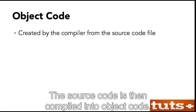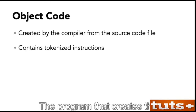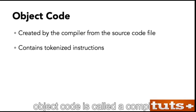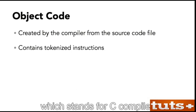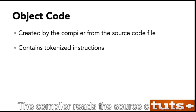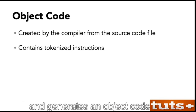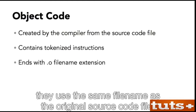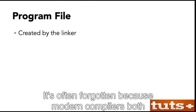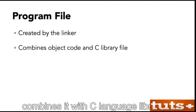The source code is then compiled into object code. The program that creates the object code is called a compiler. The traditional name of the C language compiler is cc, which stands for C compiler. The compiler reads the source code file and generates an object code file. Object code files have a .o file name extension, and they use the same file name as the original source code file. The next step is called linking.